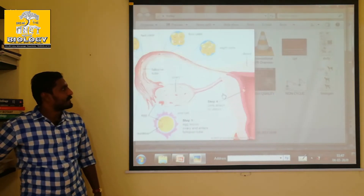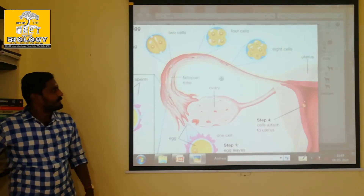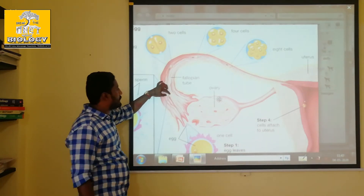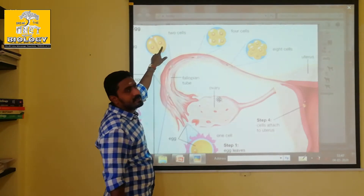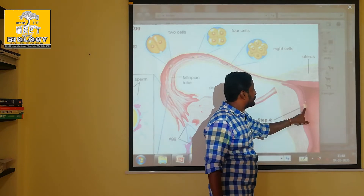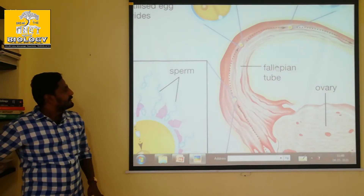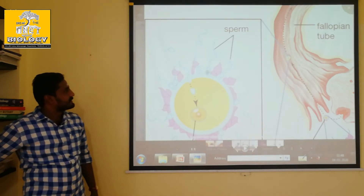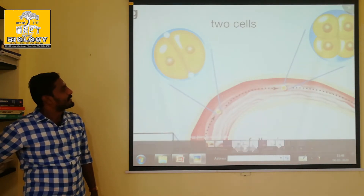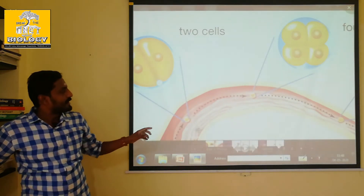So when it comes to this stage, there is a 2-cell stage. After fertilization, we form 2 cells — that is a 2-cell stage. That is a 4-cell stage, then it is an 8-cell stage. Then it is implantation. Normally in the fallopian tube the fertilization process is used — the sperm fuses with the egg and the nucleus is fused. It is a 2-cell stage, and the 2-cell stage is divided by mitosis.